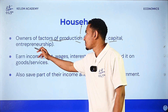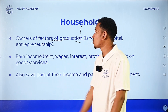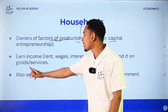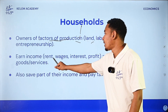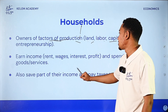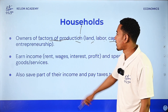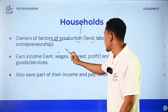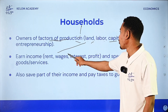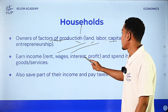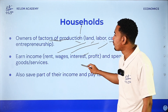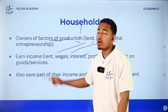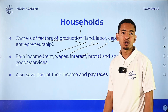As an entrepreneur and owner of factors of production, the household earns income in the form of rent (from land), wage (from labor), interest (from capital), and profit (from entrepreneurship).